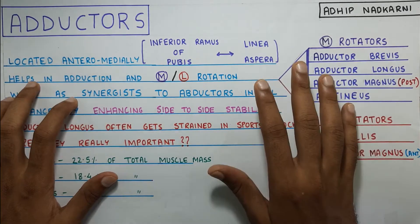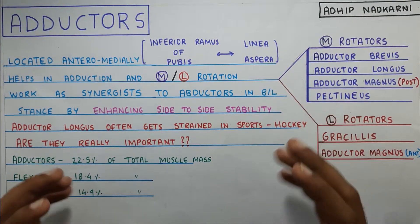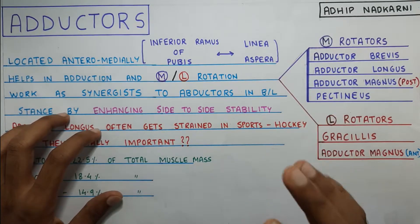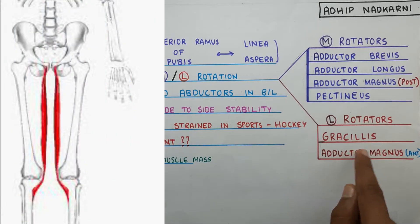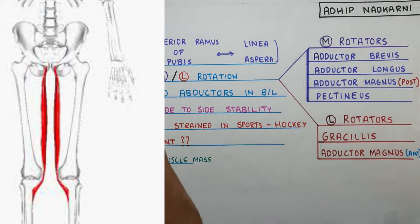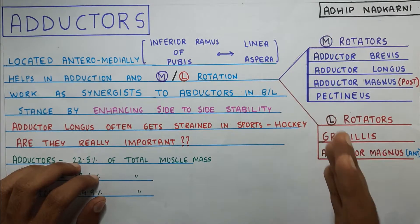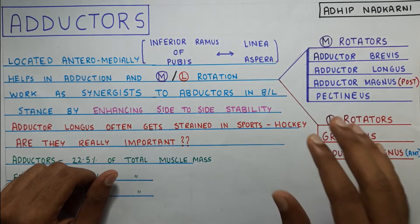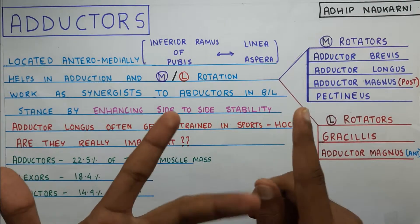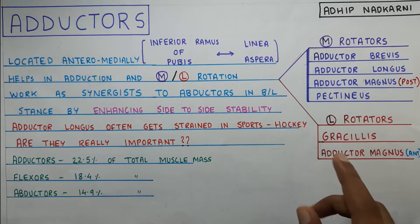An important additional pointer: among all the adductors, gracilis is the only two-joint muscle. It crosses both the knee joint and the hip joint, and it attaches near the pes anserine — the SGS muscle group — on the medial side. That is where gracilis attaches, making it the only two-joint adductor.